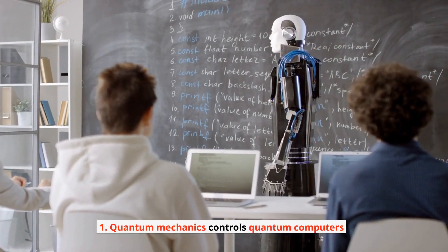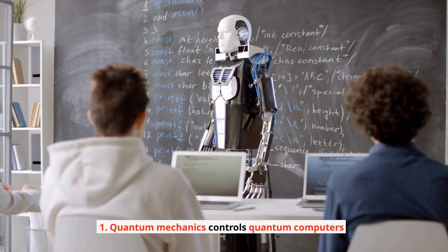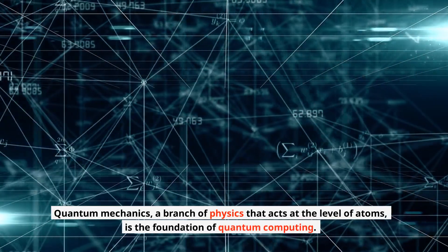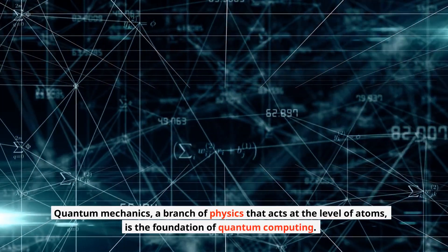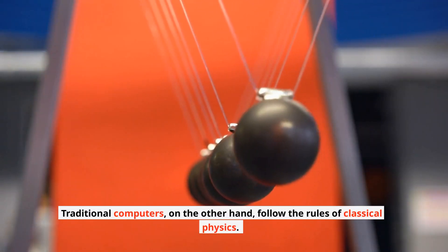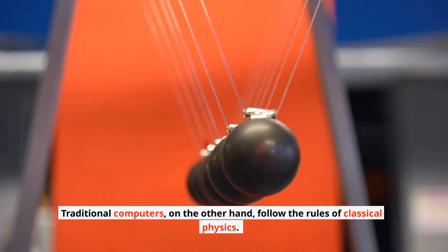1. Quantum mechanics controls quantum computers. Quantum mechanics, a branch of physics that acts at the level of atoms, is the foundation of quantum computing. Traditional computers, on the other hand, follow the rules of classical physics.